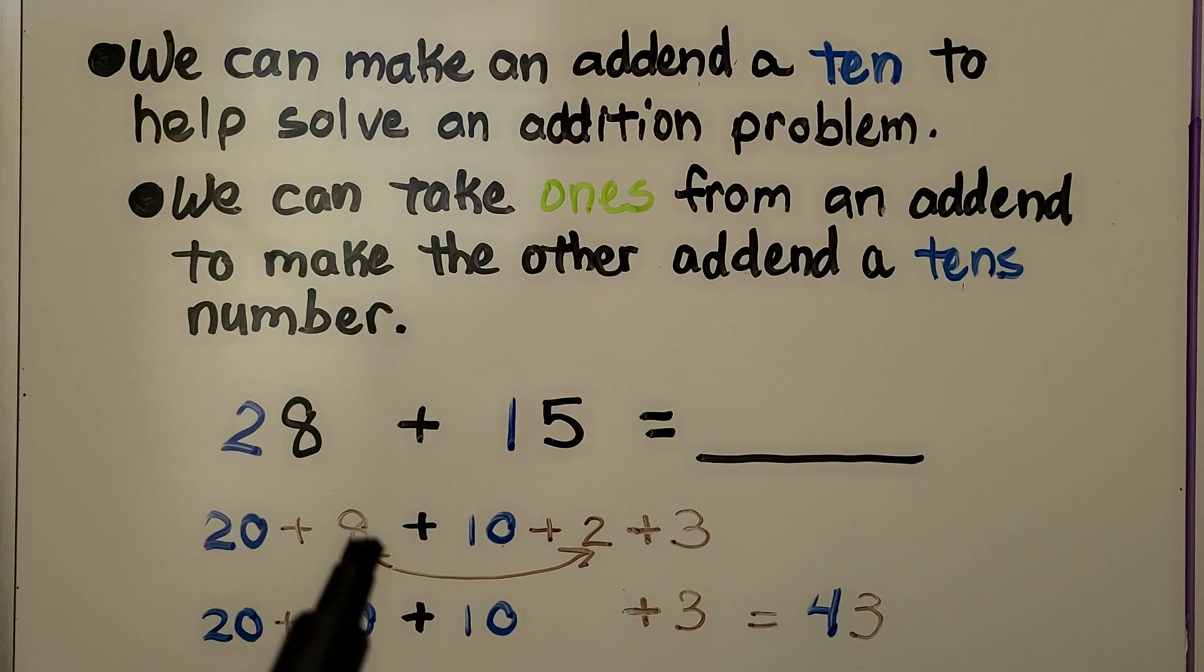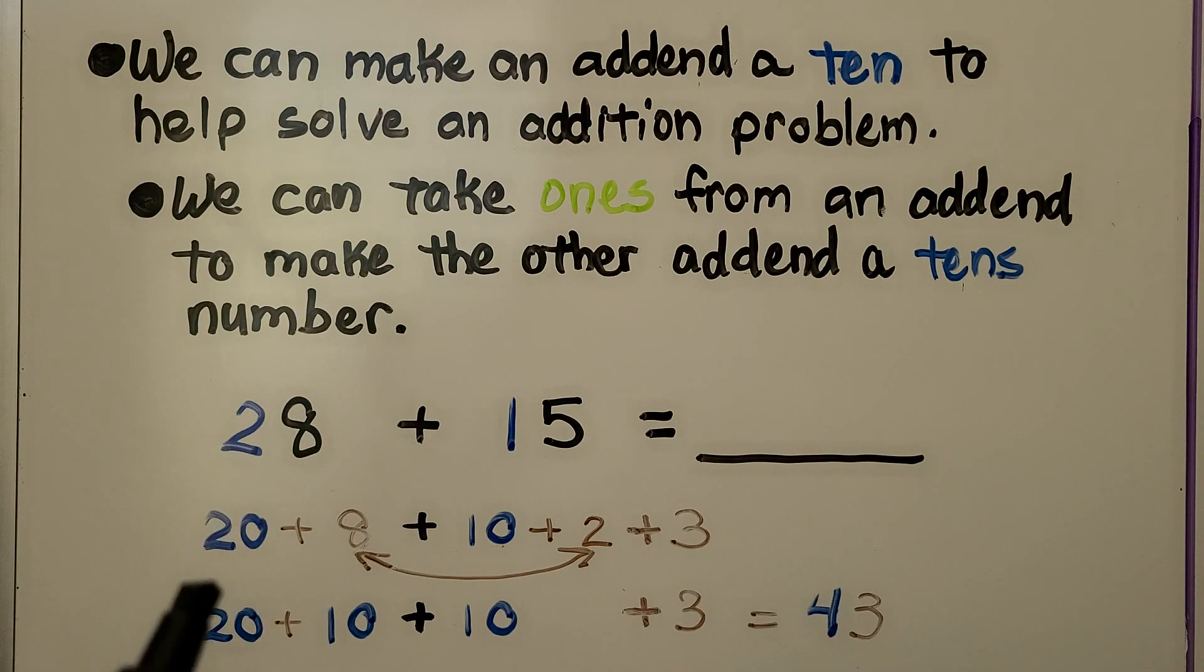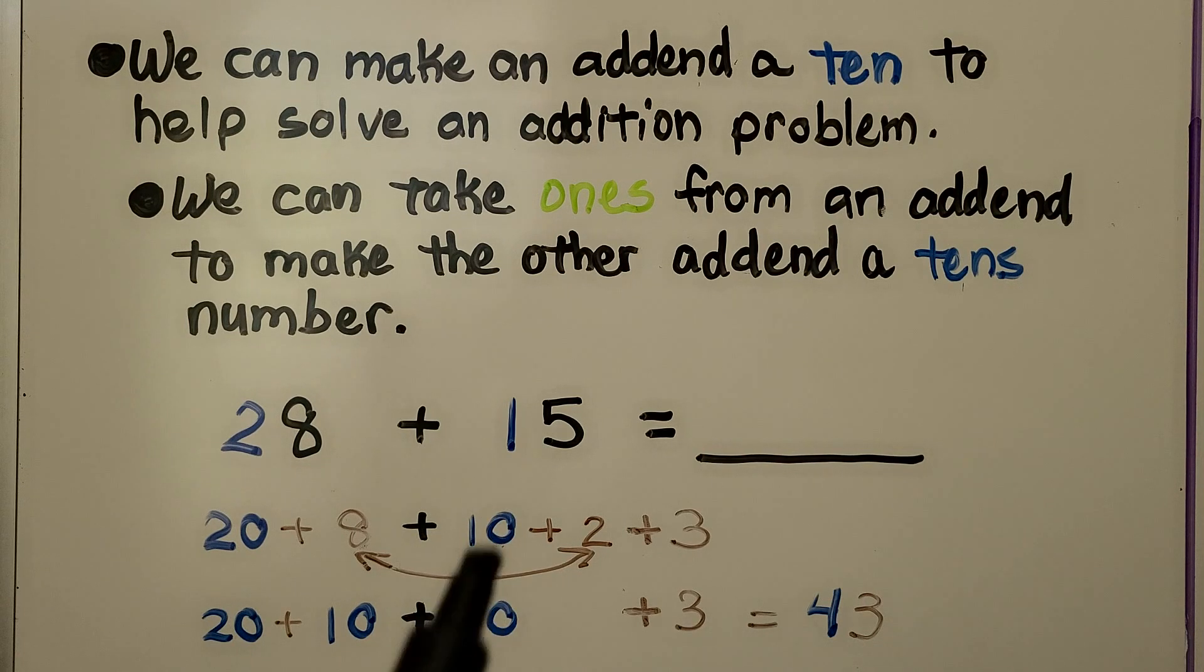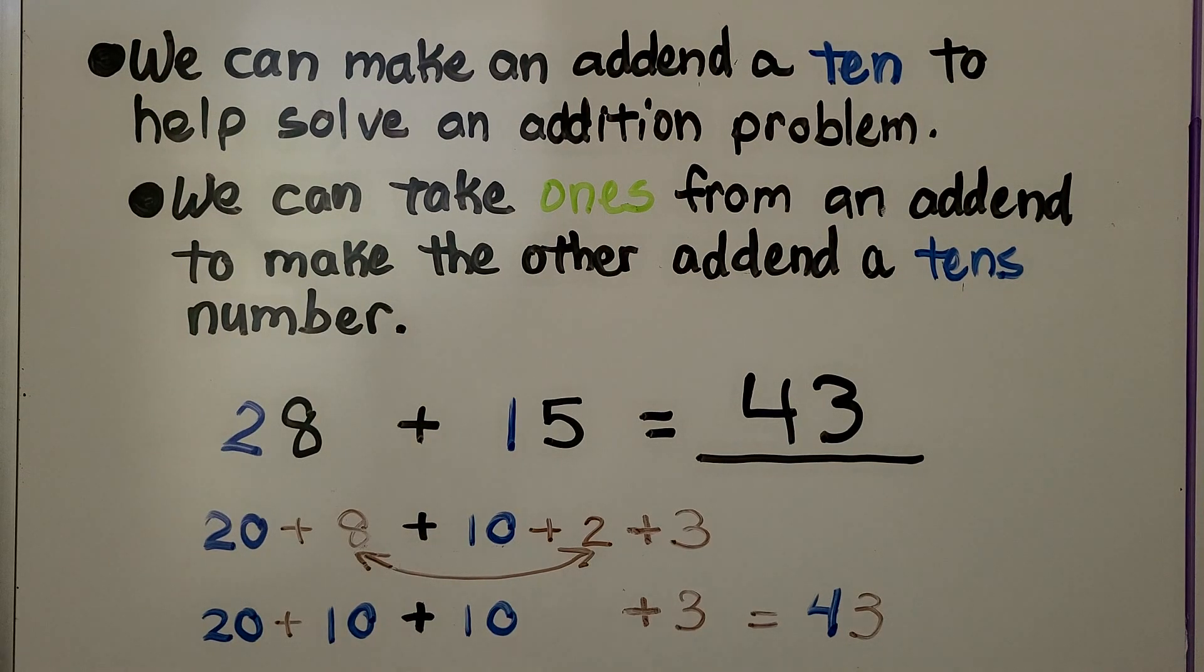We can take this 2 and give it to the 8 to make a 10. Now we have 20 plus 10 plus another 10 plus that 3. Now we have 20, 30, 40 plus 3. We have 43. 28 plus 15 is equal to 43.